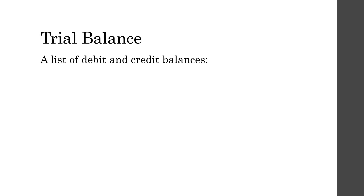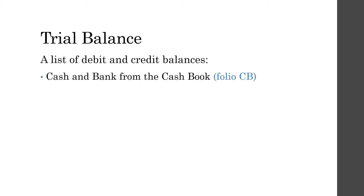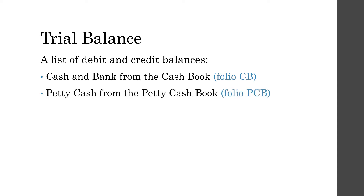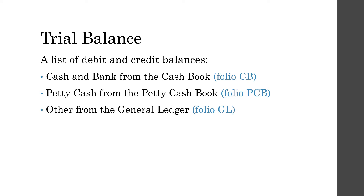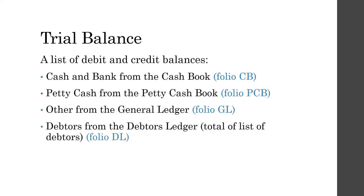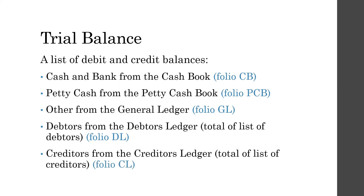What is the trial balance? It is a list of debit and credit balances. Cash and bank from the cash book with folio CB, petty cash from the petty cash book with folio PCB, other ledger accounts from the general ledger folio GL, debtors from the debtors ledger which is the total of the list of debtors with folio DL, and creditors from the creditors ledger which is the total of the list.